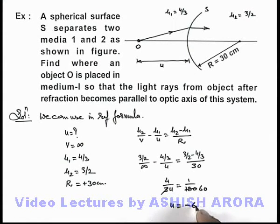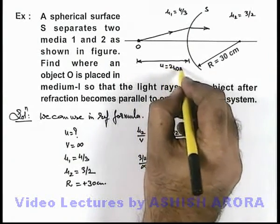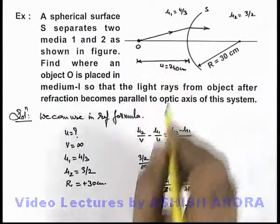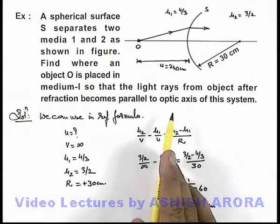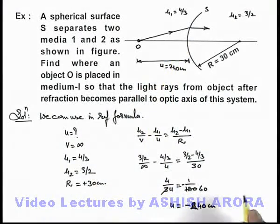minus 240 centimeters. So minus 240 centimeters means the object must be placed at a distance of 240 centimeters from the pole of this surface in order to make all the refracted rays parallel to the optic axis. So this will be the answer to this problem.